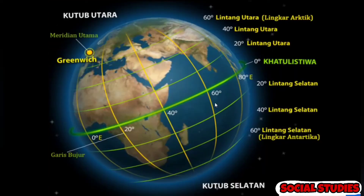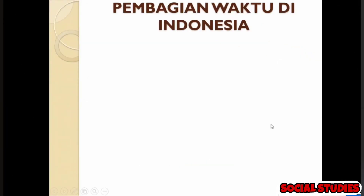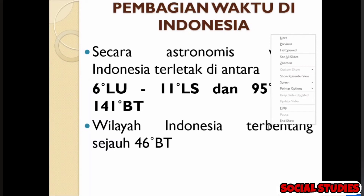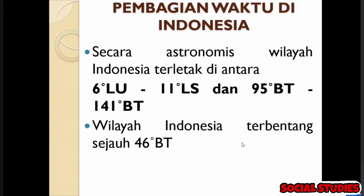Sekarang kita lihat peta ini. Ini garis bujur — sudut keliling lingkaran itu 360, jadi setiap 15 derajat berputar itu 1 jam. Sekarang kita ke pembagian waktu di Indonesia. Kita lihat dasarnya dulu: letak astronomis wilayah Indonesia terletak di antara 6 derajat lintang utara sampai 11 derajat lintang selatan, dan 95 derajat bujur timur sampai 141 derajat bujur timur. Yang berfungsi untuk menentukan waktu itu adalah garis bujur, bukan garis lintang.